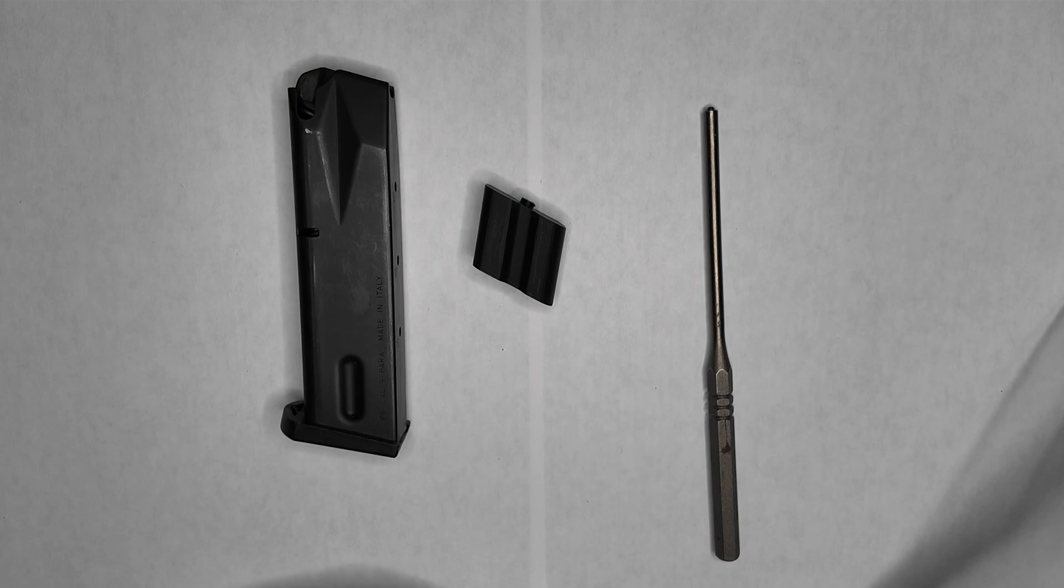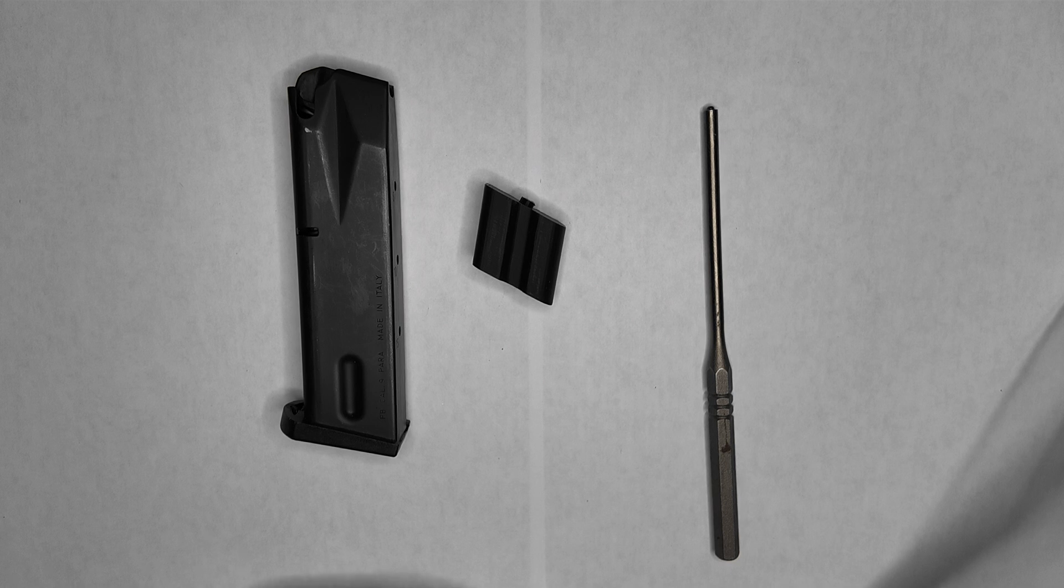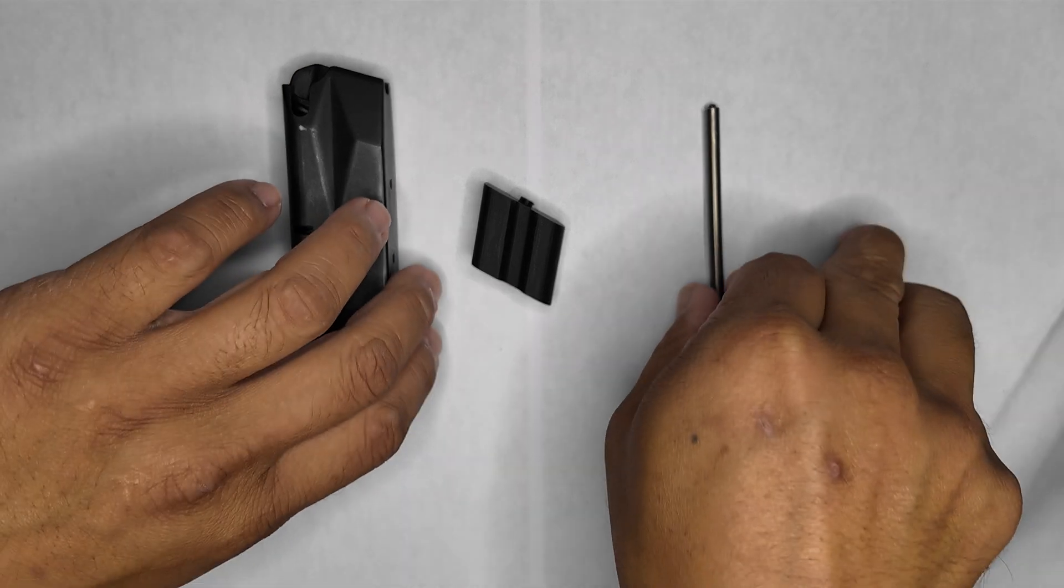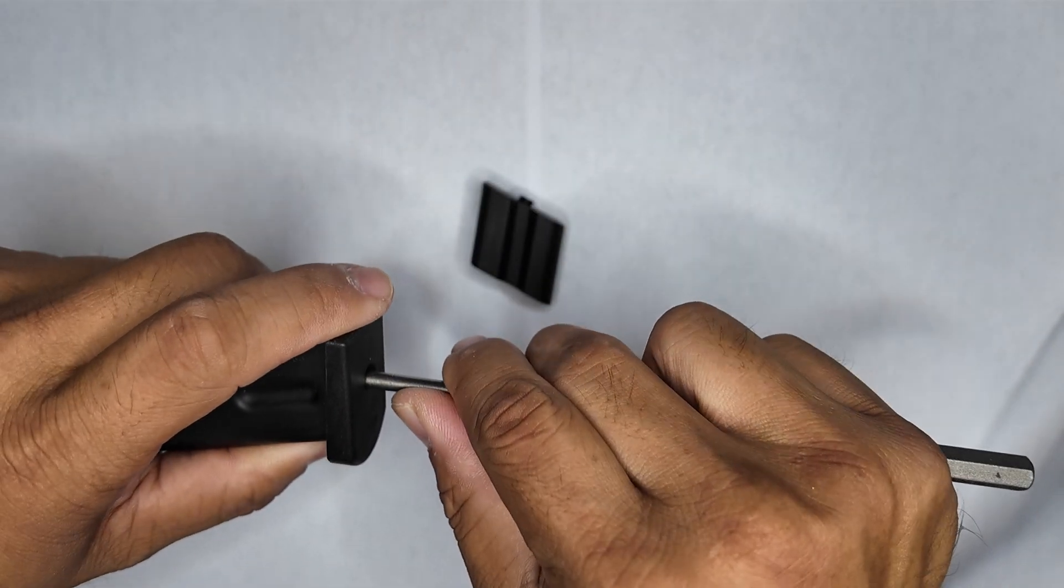This is the demo of the mag limiter made by LPG Works for the Beretta 92 15 round magazine. We will begin by removing the floor plate.